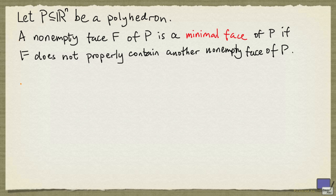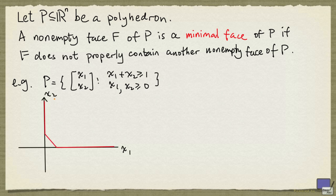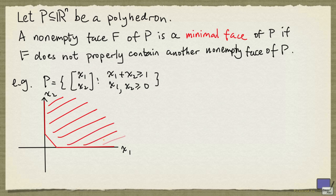Let's look at a couple of examples. Suppose that P is given by these inequalities, then this is a sketch of P. So this point here is (1,0), and this point here is (0,1).